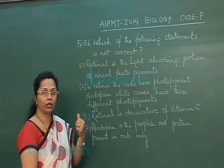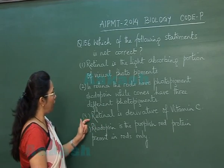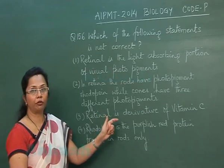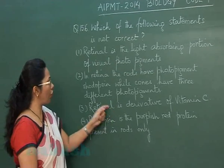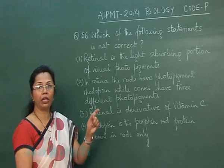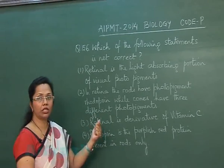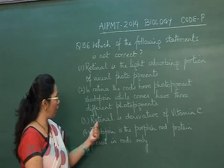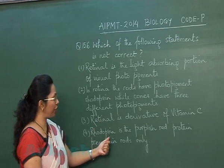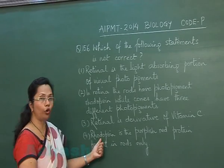The cones have three different pigments for three different wavelengths — red, blue, and green. The third choice states that retinal is a derivative of Vitamin C. This is wrong because retinal is actually a derivative of Vitamin A. Vitamin A is retinol, and retinal is the aldehyde of retinol.